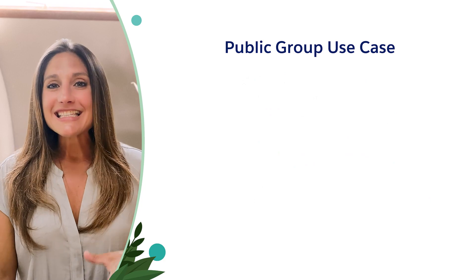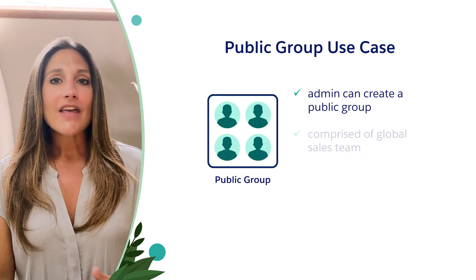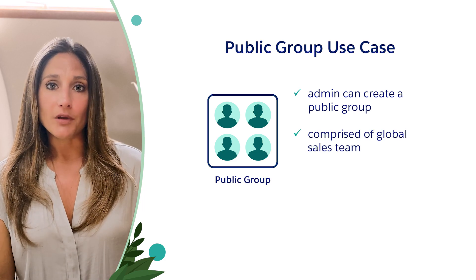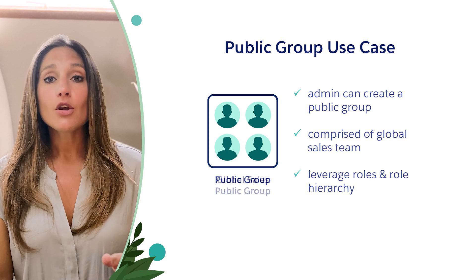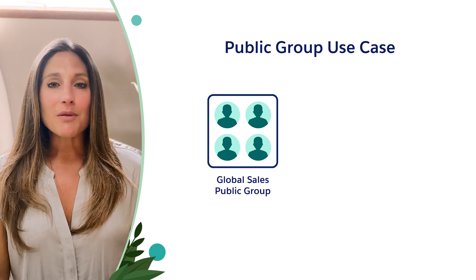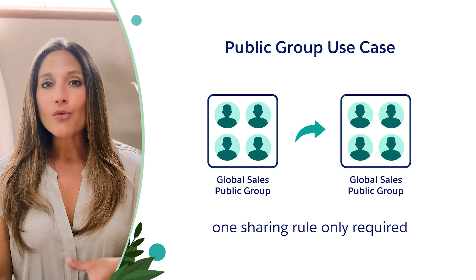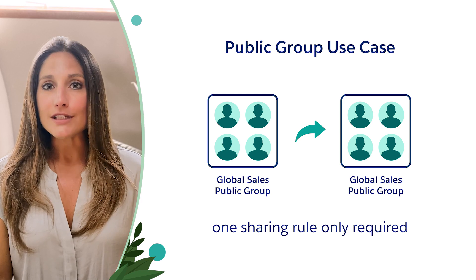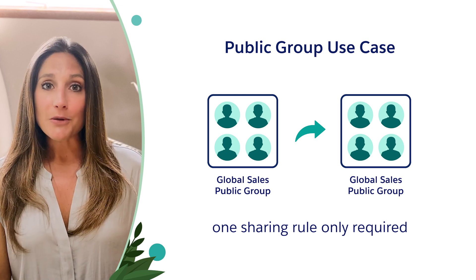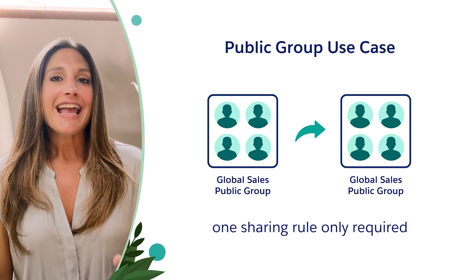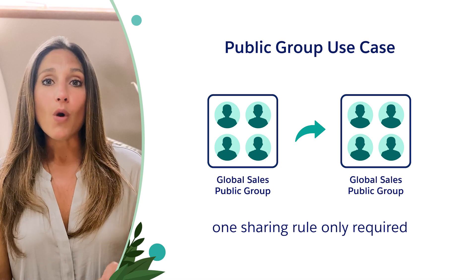Instead of needing 16 sharing roles, an admin can create one public group comprised of all of the sales reps globally. You can use their roles in the role hierarchy, for example, and call it global sales. With that public group, one opportunity sharing role can be created to share all records owned by anyone in the global sales public group with anyone who is a member of the global sales public group. This is much more efficient and a better alternative than needing to create 16 sharing roles to meet one requirement.